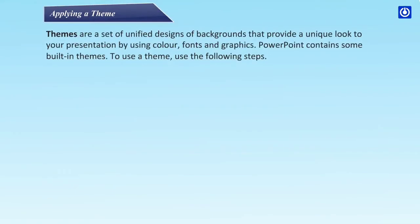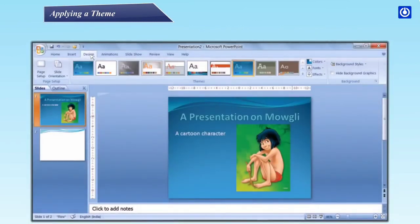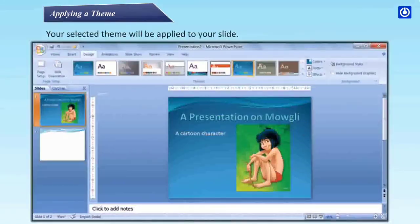Applying a theme: themes are a set of unified designs of backgrounds that provide a unique look to your presentation using color, fonts, and graphics. PowerPoint contains some built-in themes. To use a theme, follow these steps: step one, click on the Design tab; step two, in the Themes group, click More — a theme gallery opens up; step three, click the theme you want to use, and your selected theme will be applied to your slide.